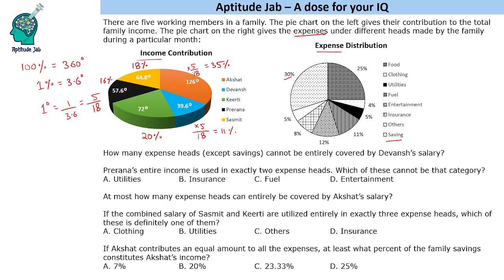There are some questions that involve a certain bit of logic. How many expense heads except savings cannot be entirely covered by Devansha's salary? Devansha's salary is 11%. We need to check which expense heads cannot be covered by 11%. Savings is excluded. Two heads cannot be covered by 11% — they can be partially covered but not entirely. So there are two such categories which cannot be entirely covered by Devansha's salary.